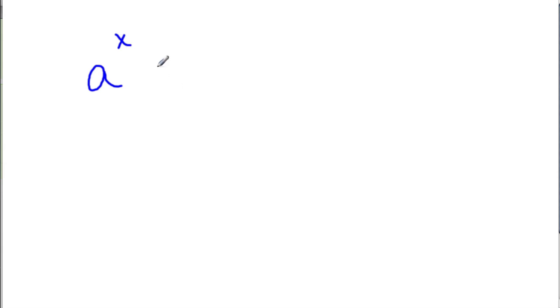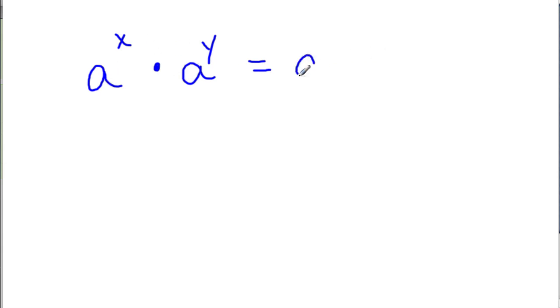One of the first laws we can look at is a special property when we have some base to some power times another base of the same value with a different or the same exponent. We can take a shortcut — instead of figuring each component out and then multiplying them, we could just keep the base and add the exponents. For example, let's say we had 2 to the third power times 2 to the second power.